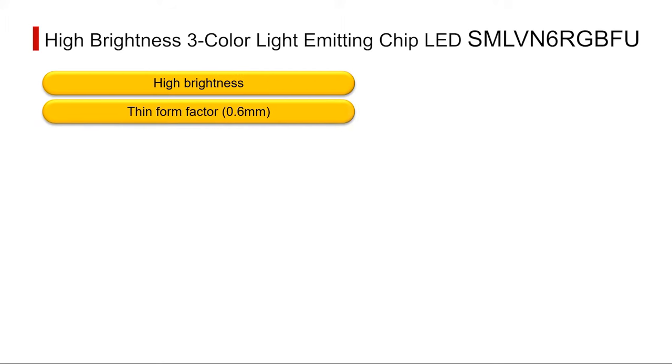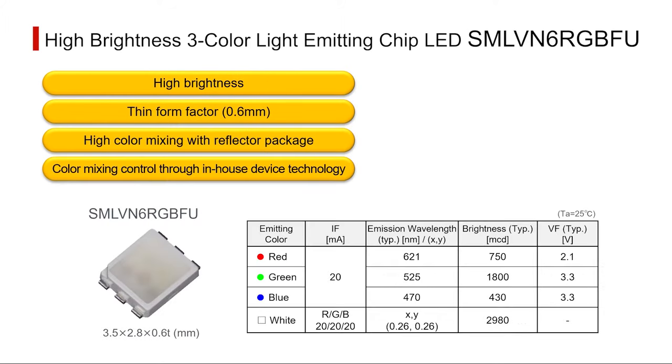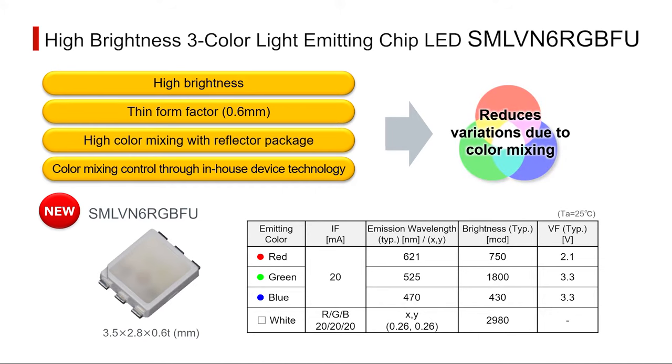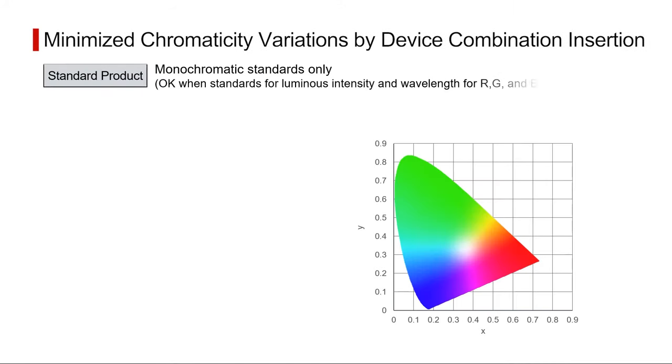This succeeds in significantly reducing color variations when mixing colors. Generally, RGB LED standards often pertain only to the emission of a single color for each RGB element, resulting in color variations when illuminated at the same time.